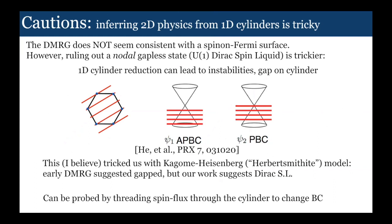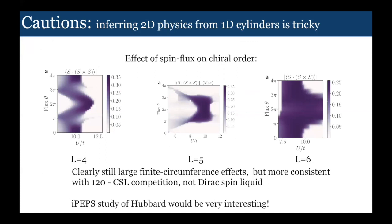Before finishing, I want to have one word of caution, which is just in general, it's difficult to infer 2D physics from 1D cylinders. One of the reasons is, in my mind, what's the most likely competition between the chiral spin liquid and the chiral spin liquid is a nodal spin liquid. Imagine, rather than having spinons form a Fermi surface, instead they form Dirac cones. That can be very subtle to detect on a cylinder, because when you look at the allowed momenta on the cylinder, those momenta might actually miss the Dirac cone. If the allowed momenta miss the Dirac cone, you might mistake it for being gapped when it's actually gapless. I think this is what's actually happening in the Kagome Heisenberg model. Early DMRG thought it was gapped, but when we analyzed it in this language, we found evidence it was gapless. We've done flux threading to check this in the triangular lattice model, and it does not seem to be consistent with the Dirac spin liquid. So at the moment, I'm still fairly confident of this chiral prediction. But hopefully someone can do iPEPS or something to get rid of these finite circumference effects.